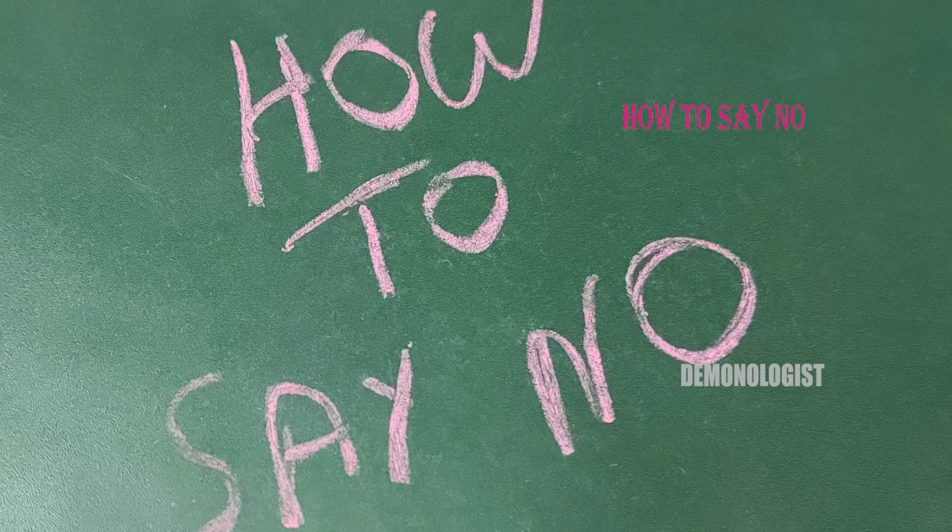Do you know what a binary is? It's a pattern recognized by computers containing a series of zeros and ones. A computer can represent anything — a word, a picture, an audio file, or a video in binary language.